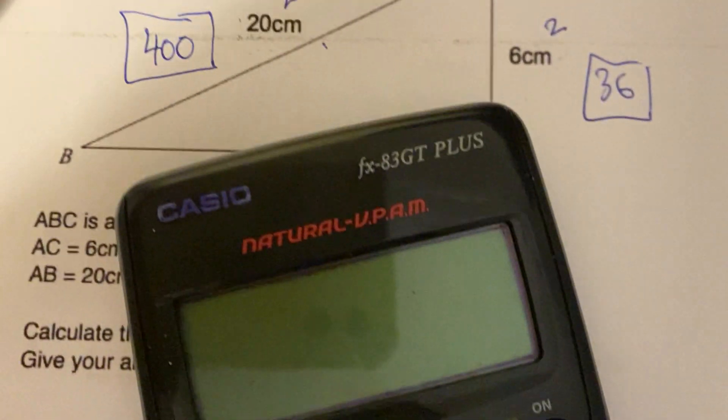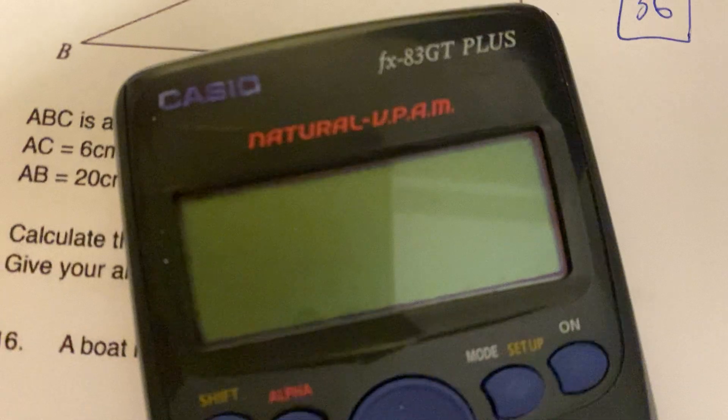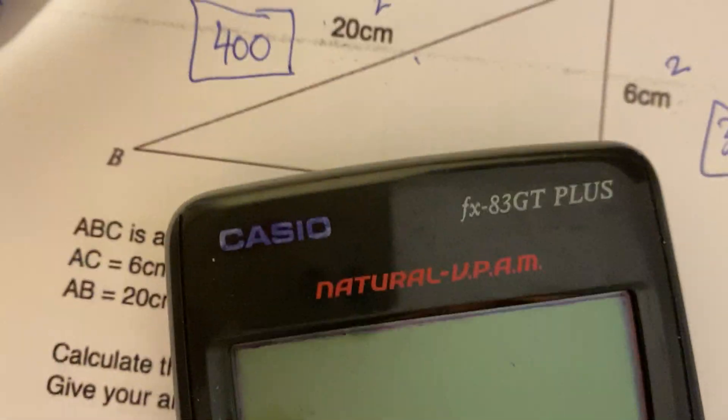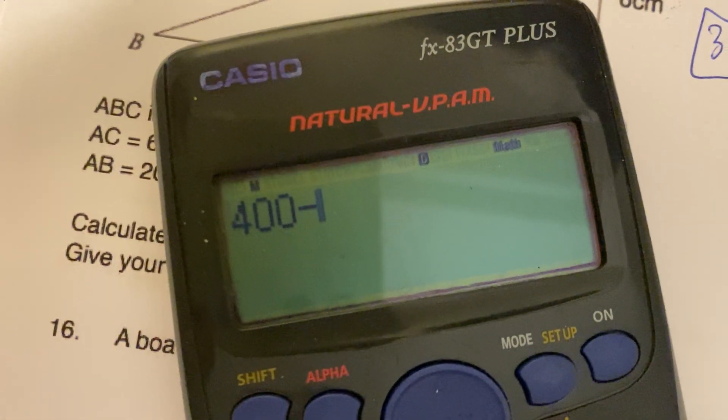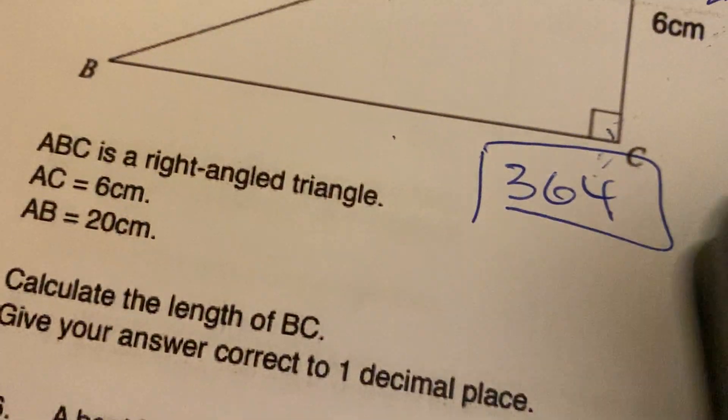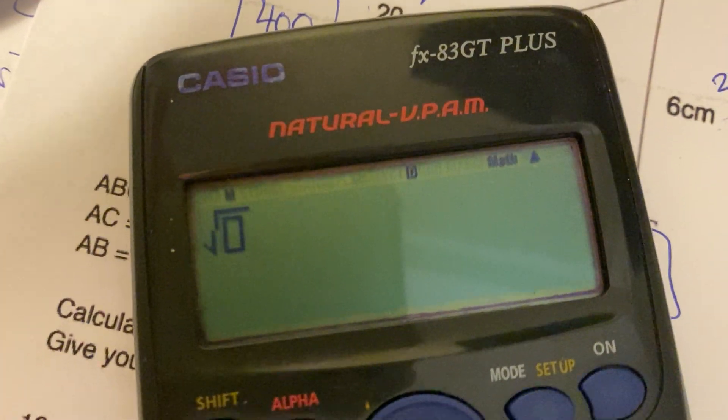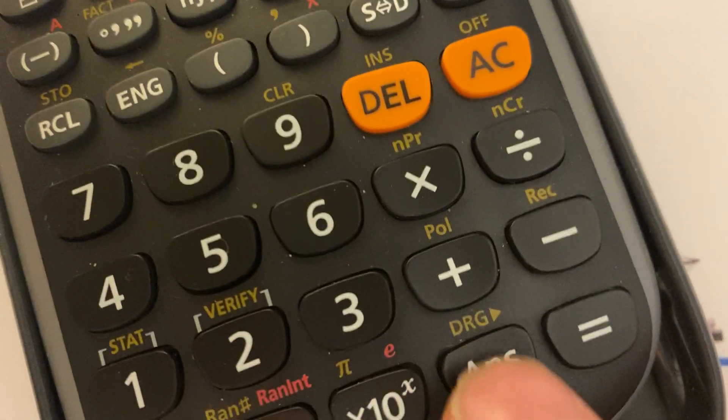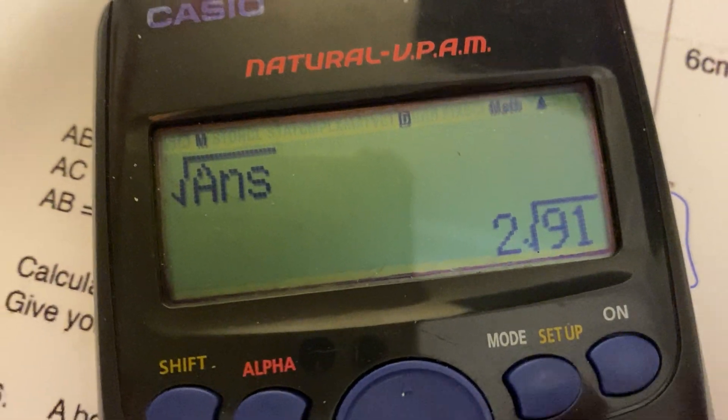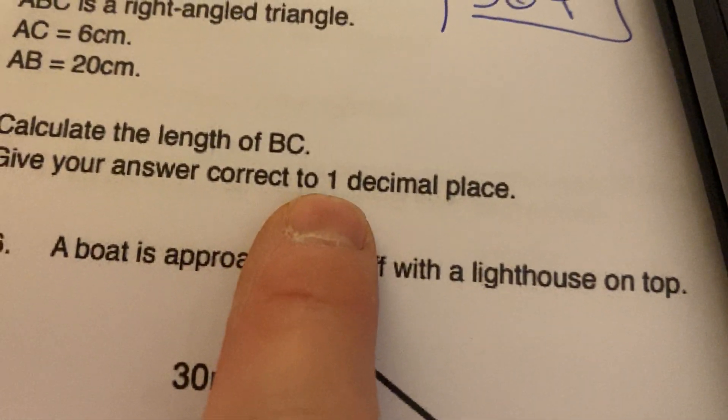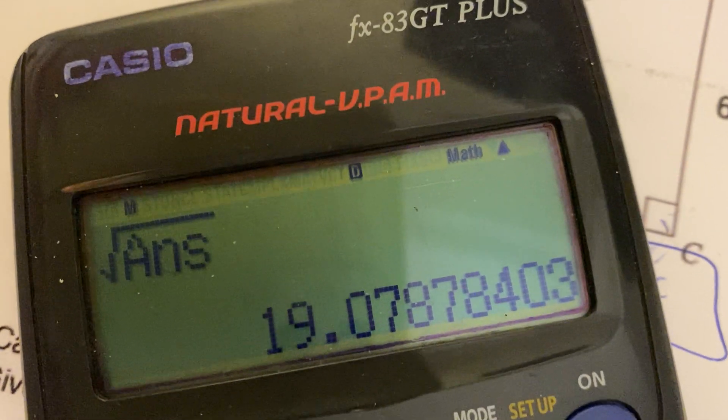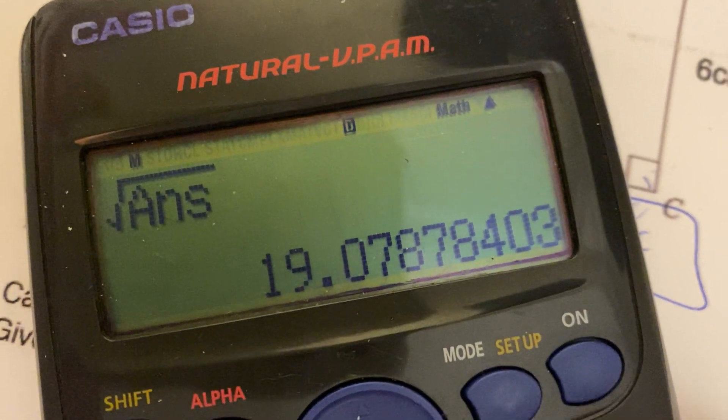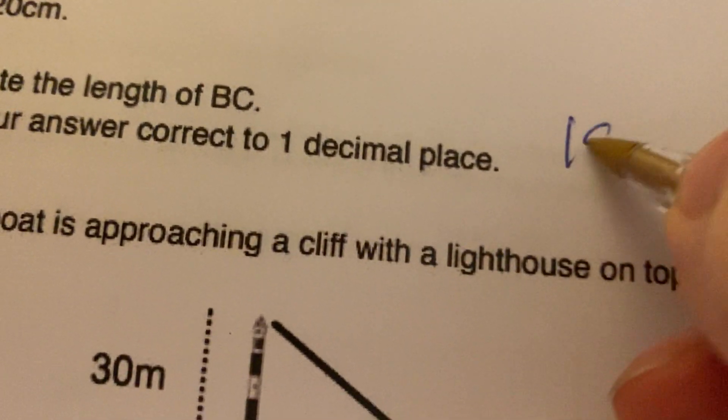Put it in your calculator - don't try to be too clever in an exam, if you've got a calculator, use it. So 400 minus 36 equals, there we go, happy days. I'm going to square root that. Press the answer button for the previous answer. It gives me in surd form, and it wants correct to one decimal place. If I press S to D for standard decimal, I get 19.078, so it's 19.1 cm.